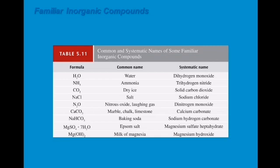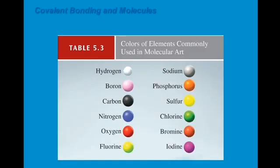Colors are used to represent certain elements in molecular structures. Hydrogen is white, carbon is black, nitrogen is blue, oxygen is red, chlorine is yellow-green, sodium is gray, phosphorus is orange, sulfur is yellow, bromine is red, and iodine is violet.